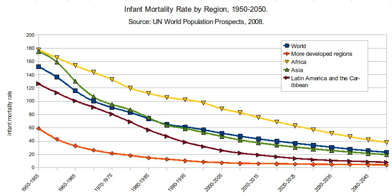Reasons for high preterm birth rates in the U.S. include teenage pregnancy, increase in pregnant mothers over the age of 35, increased use of in vitro fertilization which increases the risk of multiple births, obesity, and diabetes. Also, women who do not have access to health care are less likely to visit a doctor, therefore increasing their risk of delivering prematurely.